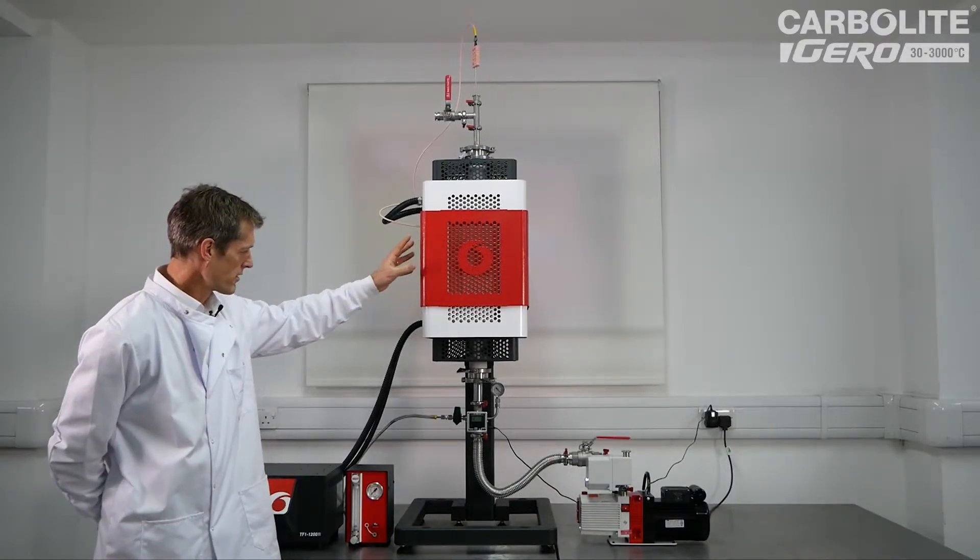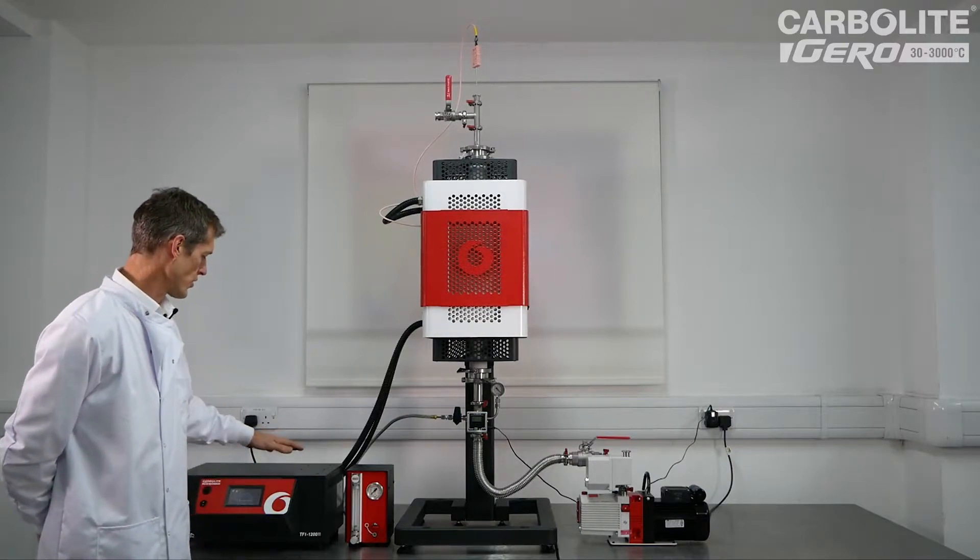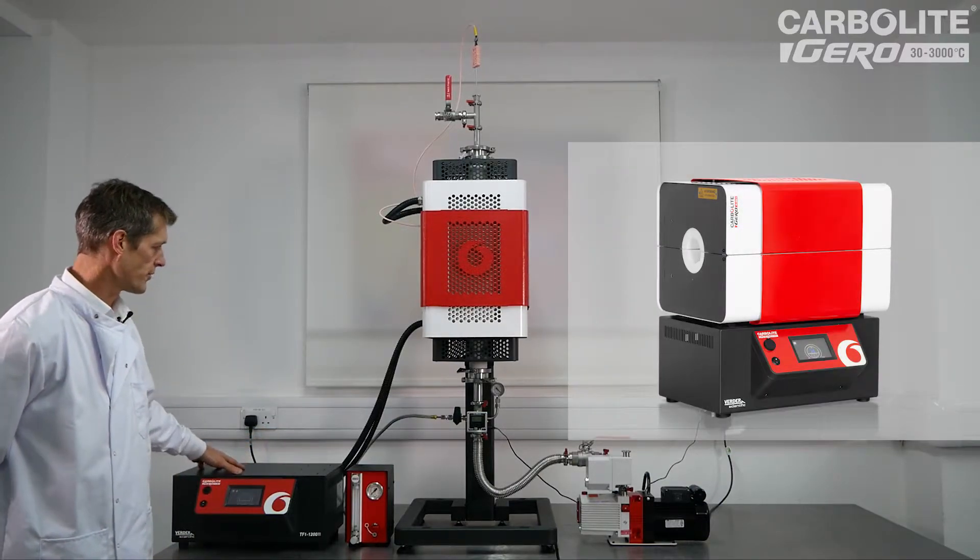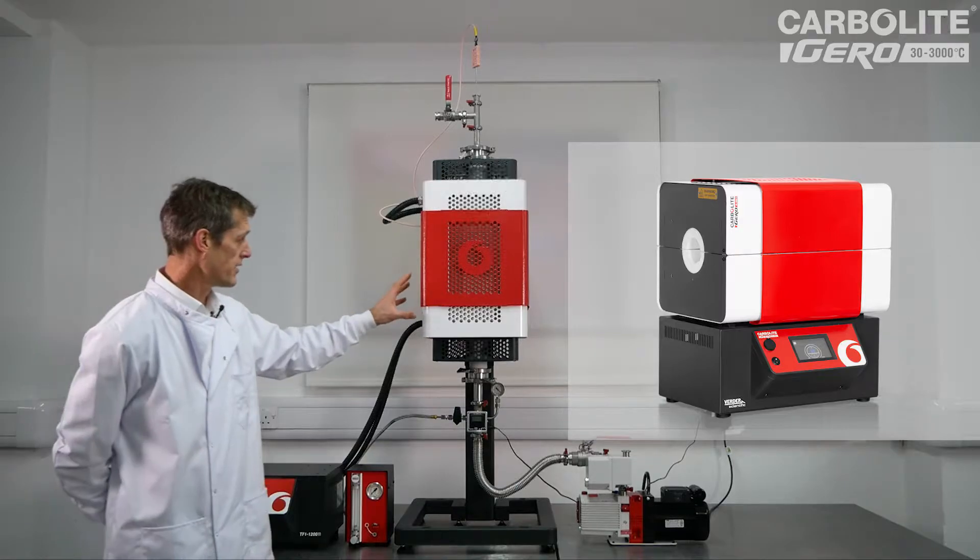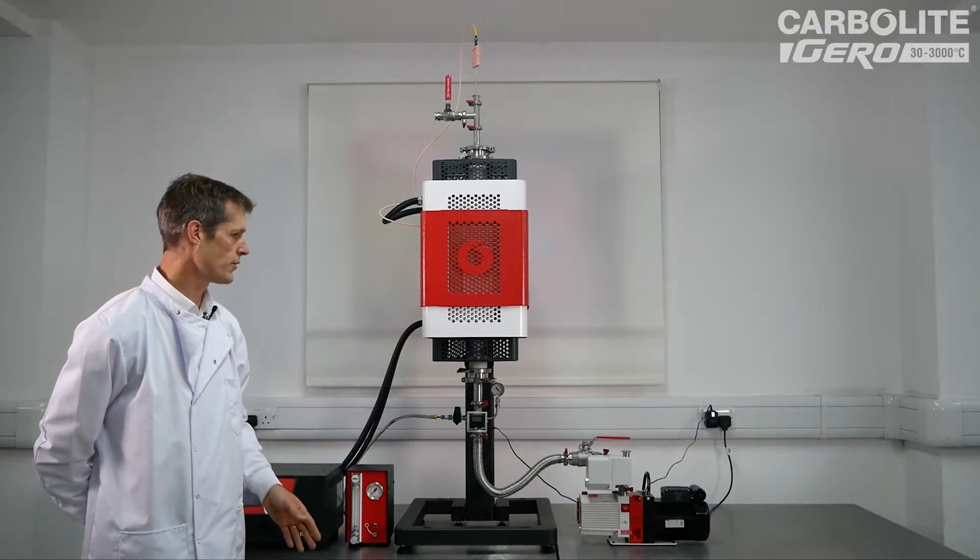It's a standard 1200 degrees C tube furnace, can be set horizontal on top of the control box, but in this case it's with an optional vertical stand to make it vertical orientation.